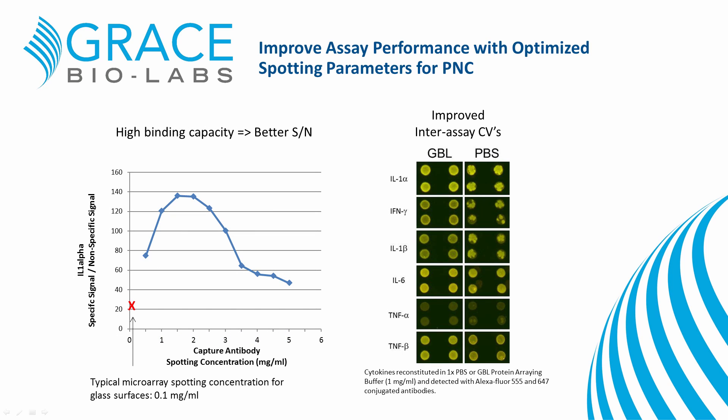Here are two examples of how to improve antibody capture assays with on-site PNC by optimizing spotting conditions. In many instances, the high binding capacity of this film is not being used effectively. Typical spotting concentrations for antibody arrays on glass slides are around 0.1 milligrams per milliliter. As shown with IL-1-alpha, with on-site PNC you can spot ten-fold more capture antibody and achieve nearly ten-fold higher signal-to-noise ratio. Additionally, choice of spotting buffer can play a critical role in effective protein binding and optimal spot morphology. For proteins like interferon gamma, protein aggregation is minimized and optimal spot morphology achieved with an optimized spotting buffer compared to standard PBS.